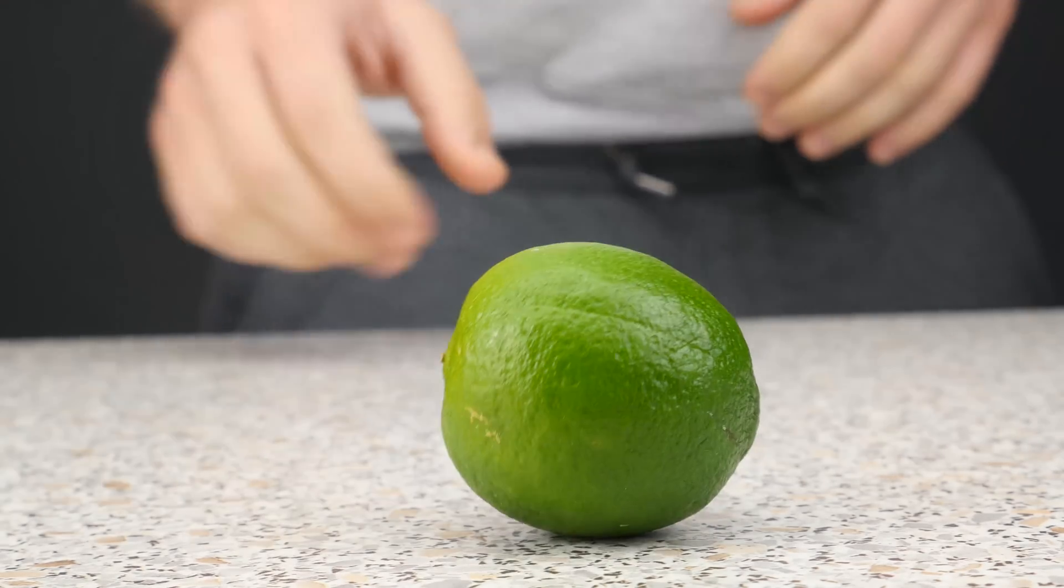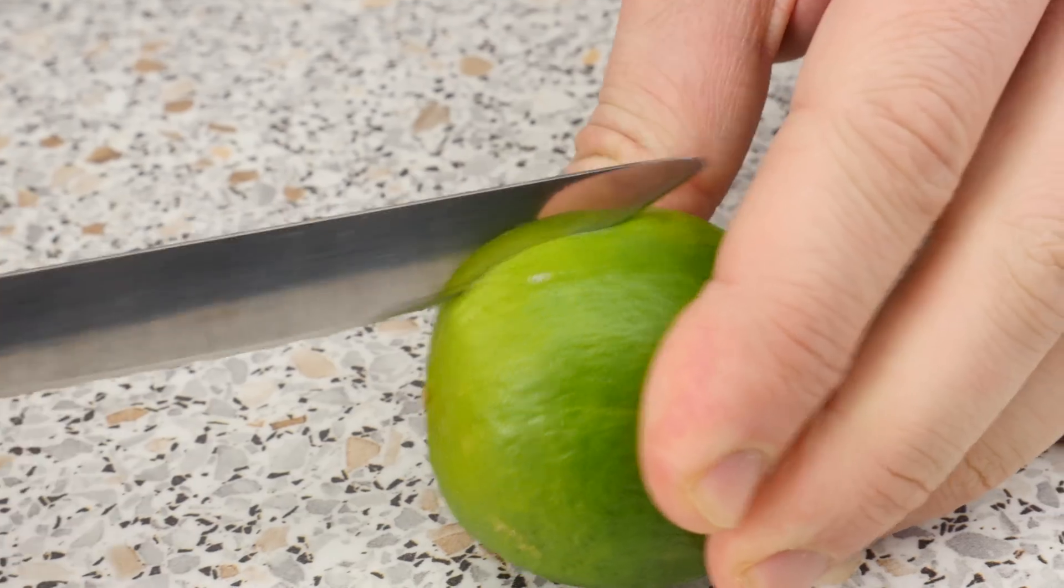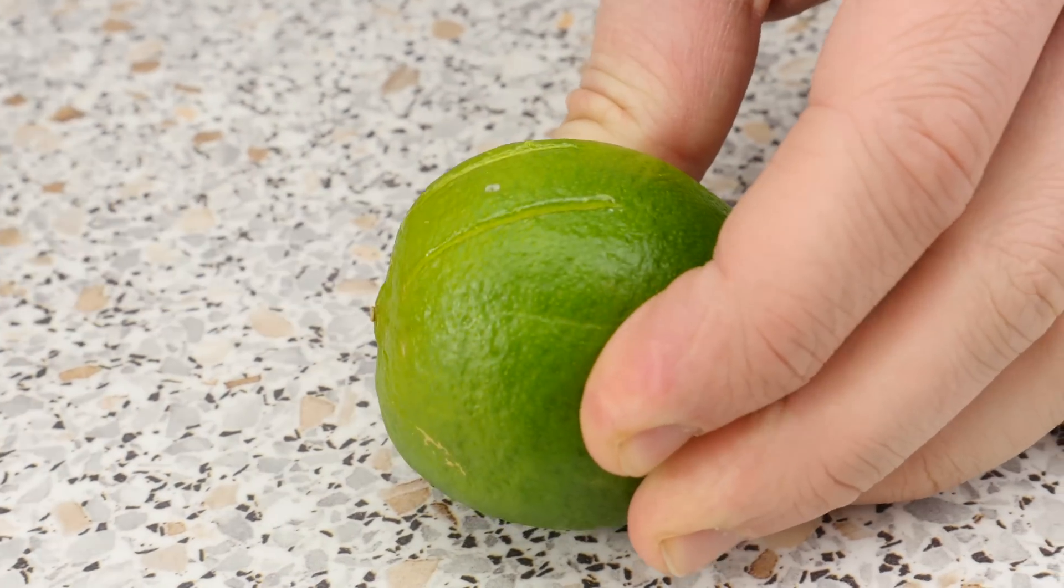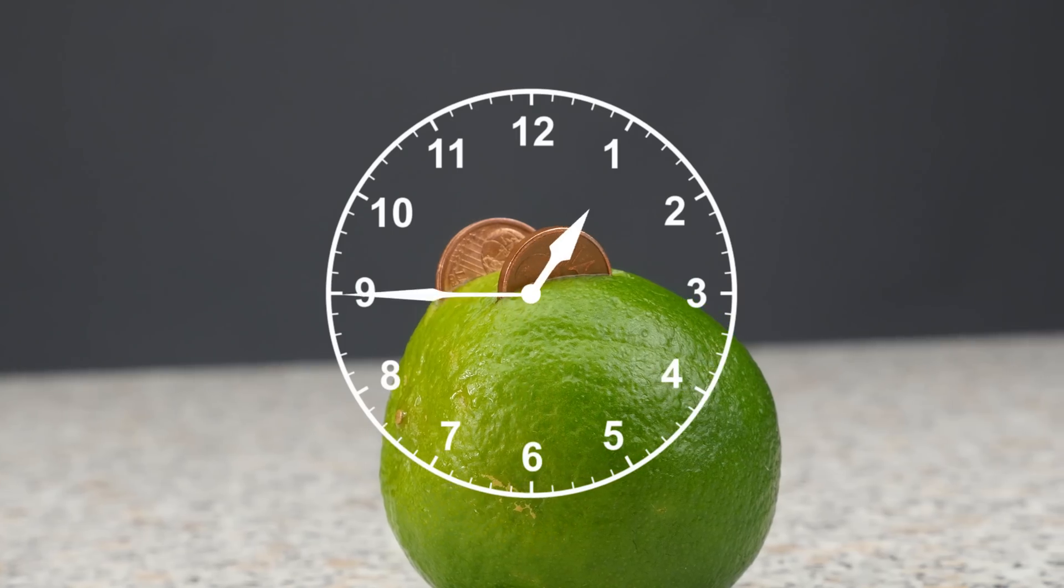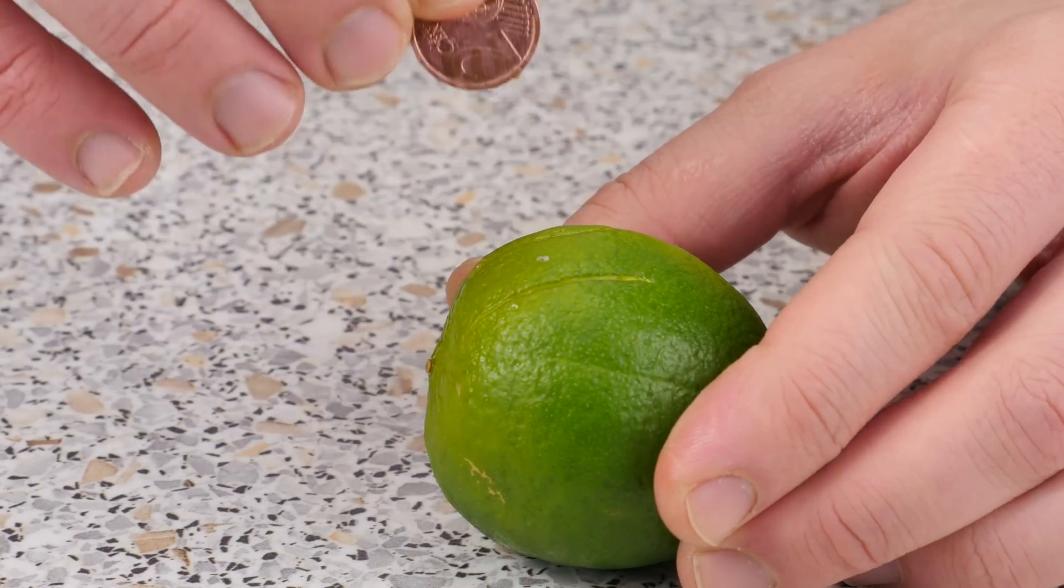Let's continue with number 5. Now, take a lime and cut some small slits into it with a knife. Then, stick some dirty copper coins in the slits. After only 15 minutes, you'll see how clean the coins are. Astounding, right?